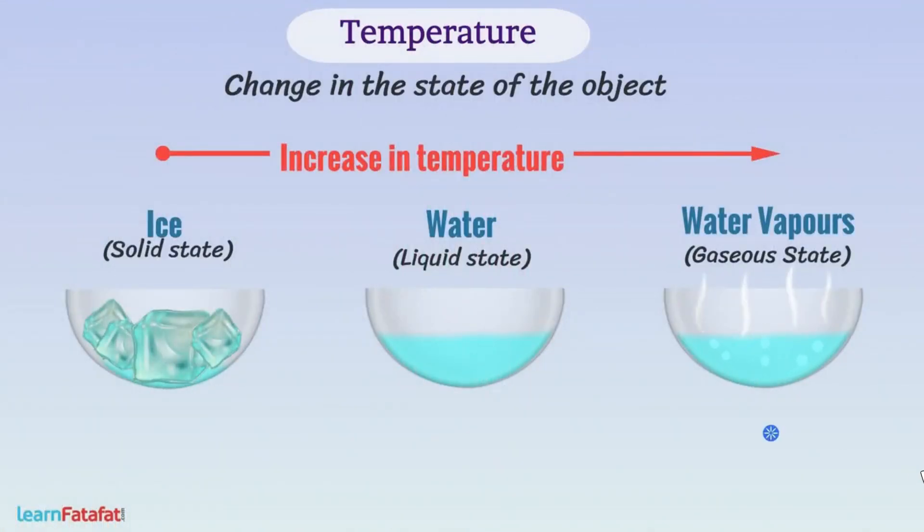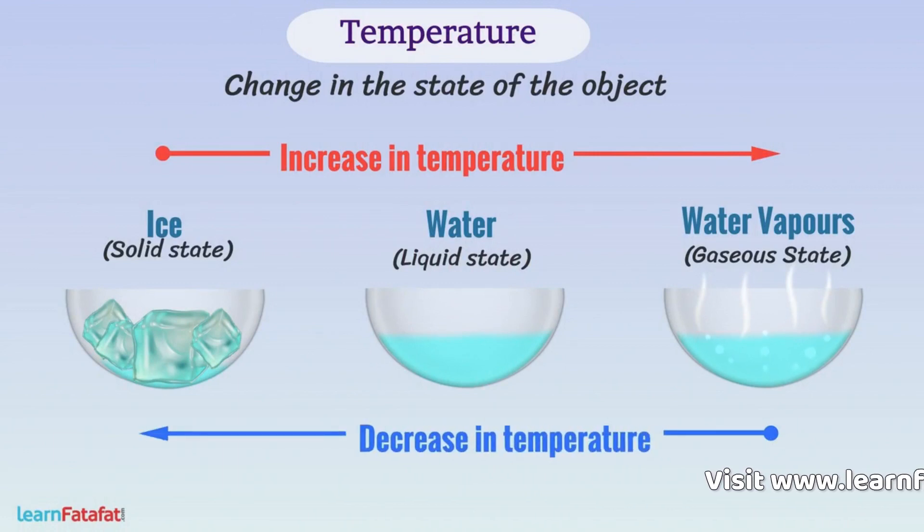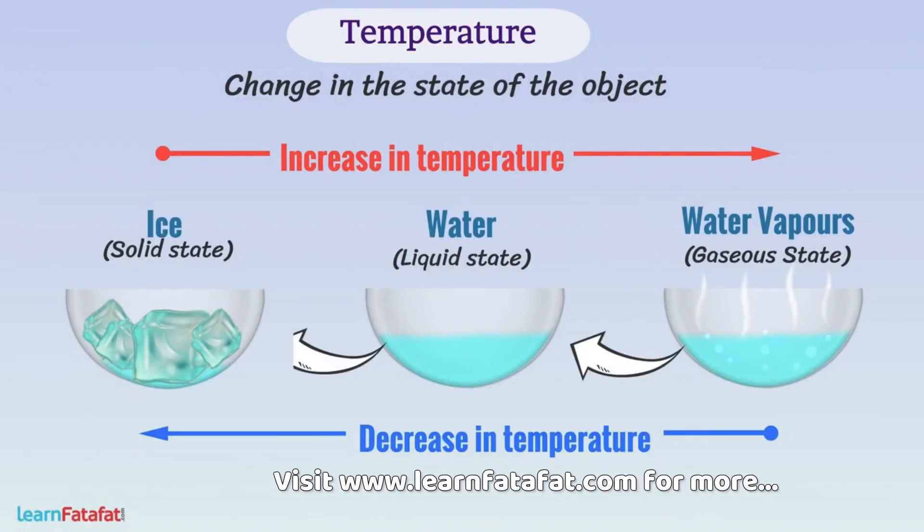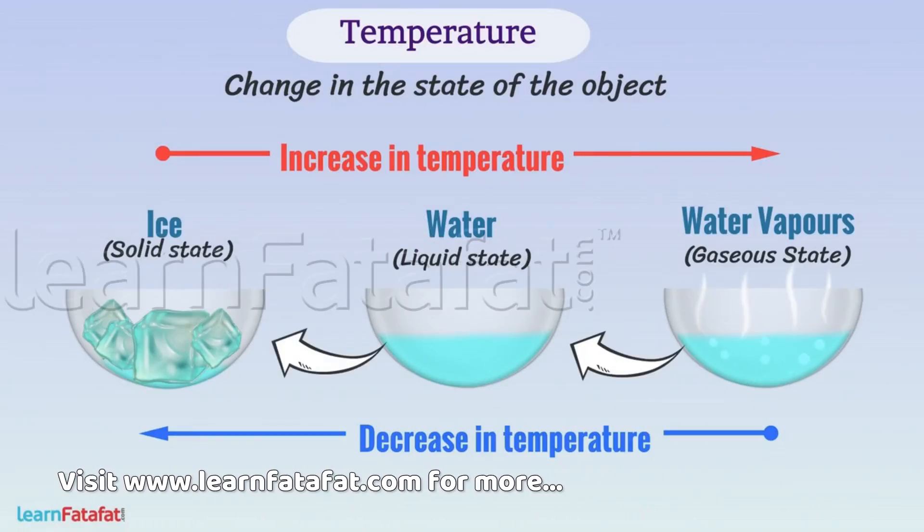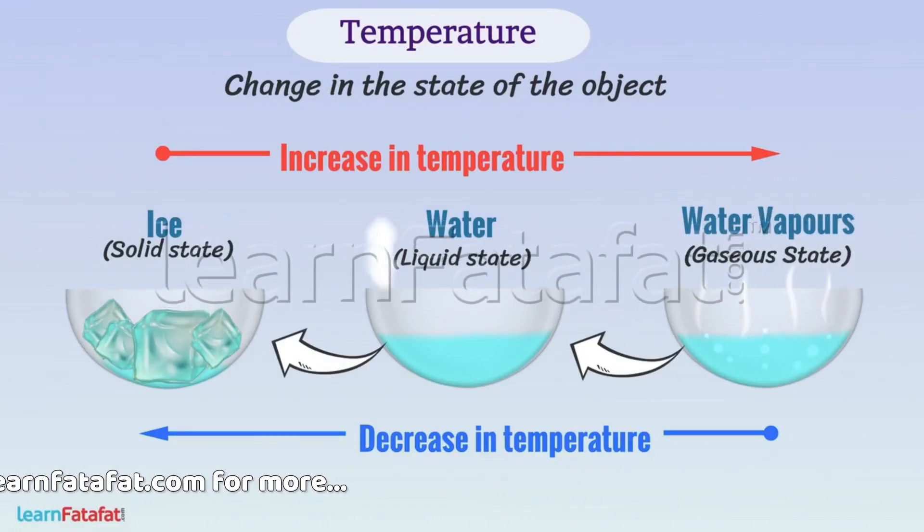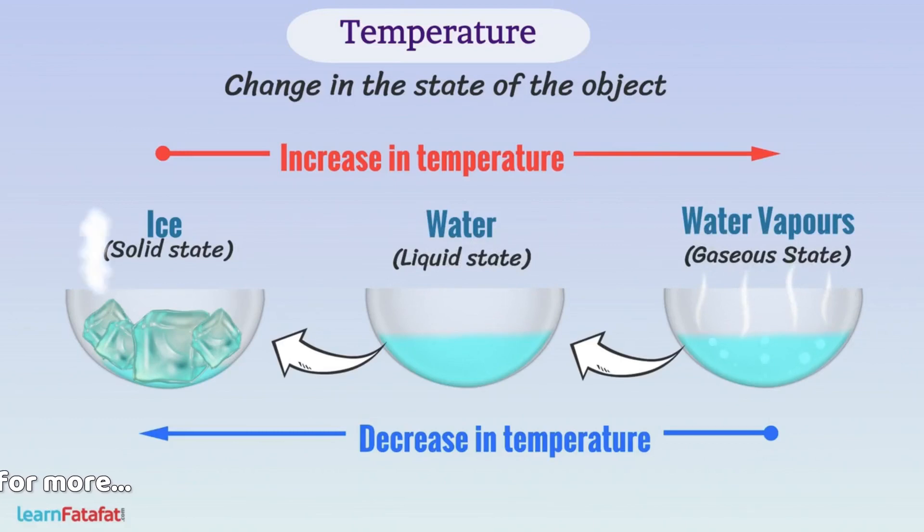Similarly, with reduction in temperature, vapors get converted into water and then to ice. That is, state changes from gaseous state to liquid state and then to solid state.